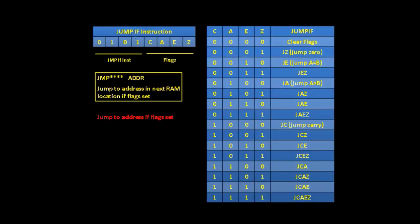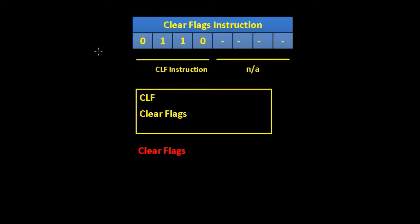Our final jump instruction is jump if, with code 0, 1, 0, 1. We then check the flag bits given by carry, A is greater, A is equal, and zero. In assembly language this is JMP with one of those four flag bits set and ADDR — it jumps to the address given in the next RAM location if the flags are set. Our next instruction was clear flags, given by 0, 1, 1, 0, which sets all flags to 0. The assembly language for it is CLF.